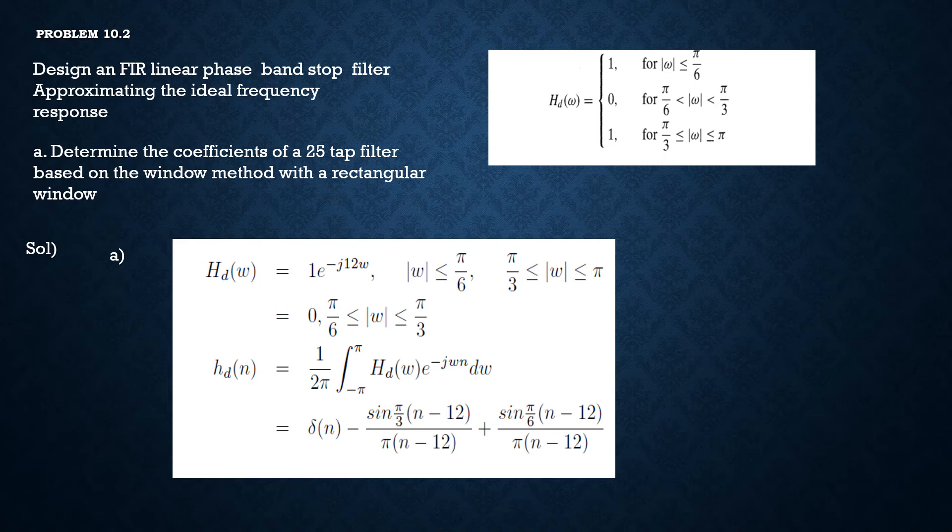To find the equivalent time domain representation, we can calculate the inverse discrete time Fourier transform by given formula. By substituting hd of omega and integrating, we can get hd of n.